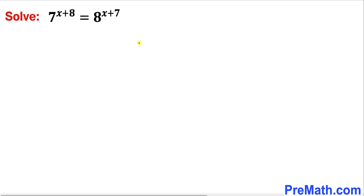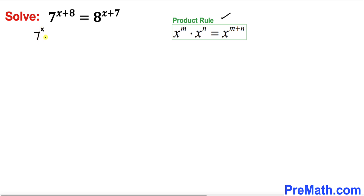Let's get started with the solution. We are going to recall the product rule of exponents and apply it on both sides of this equation. So the left hand side can be written as 7^x times 7^8, and the right hand side as 8^x times 8^7.